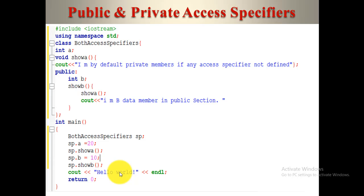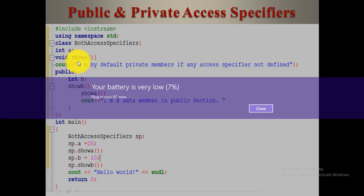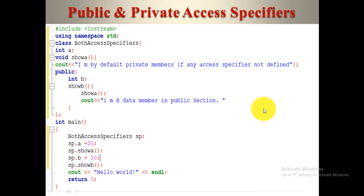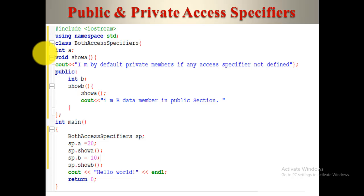Here we create an example using both public and private access specifiers. There is a variable and a function with no access specifier defined. Keep in mind: by default in C++, if you never define any access specifier, that member or function will be private by default. So the variable and the function without a specifier are private.